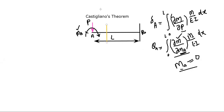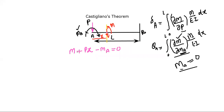We take a section at a distance X from end A. At that section, let the shear force be V and the bending moment be M. Taking moments about the axis through this point: the moment due to P is P times X (anticlockwise, positive), and the moment MA is clockwise (negative). From equilibrium, M equals MA minus P times X.